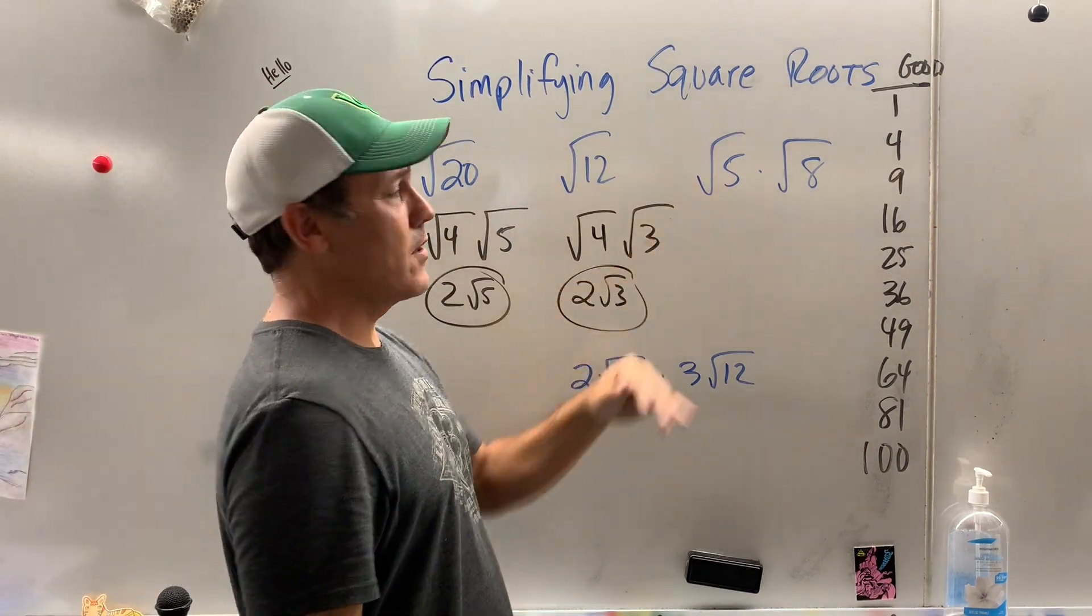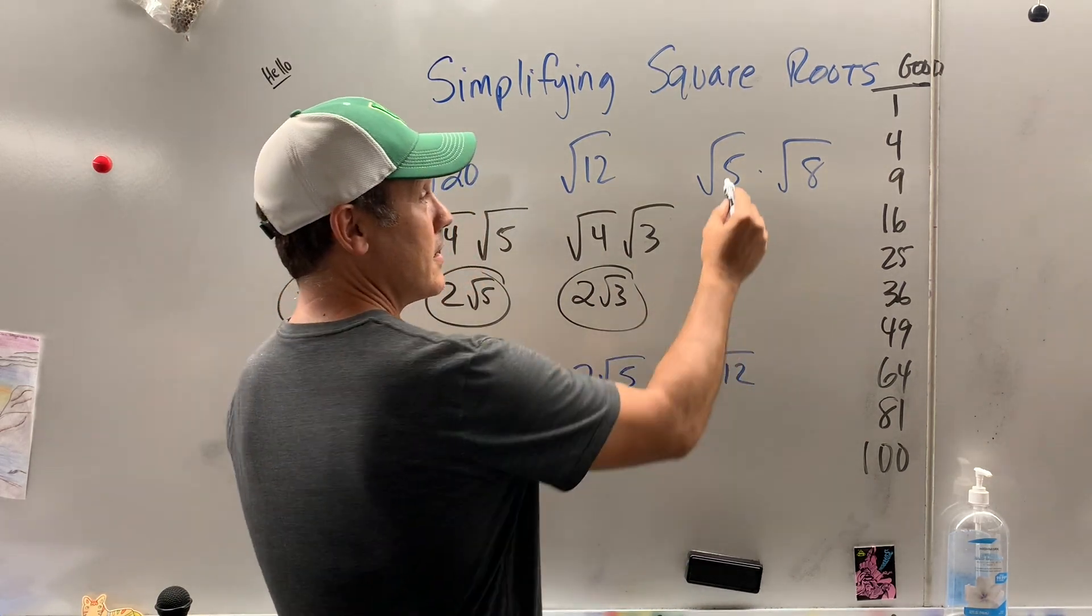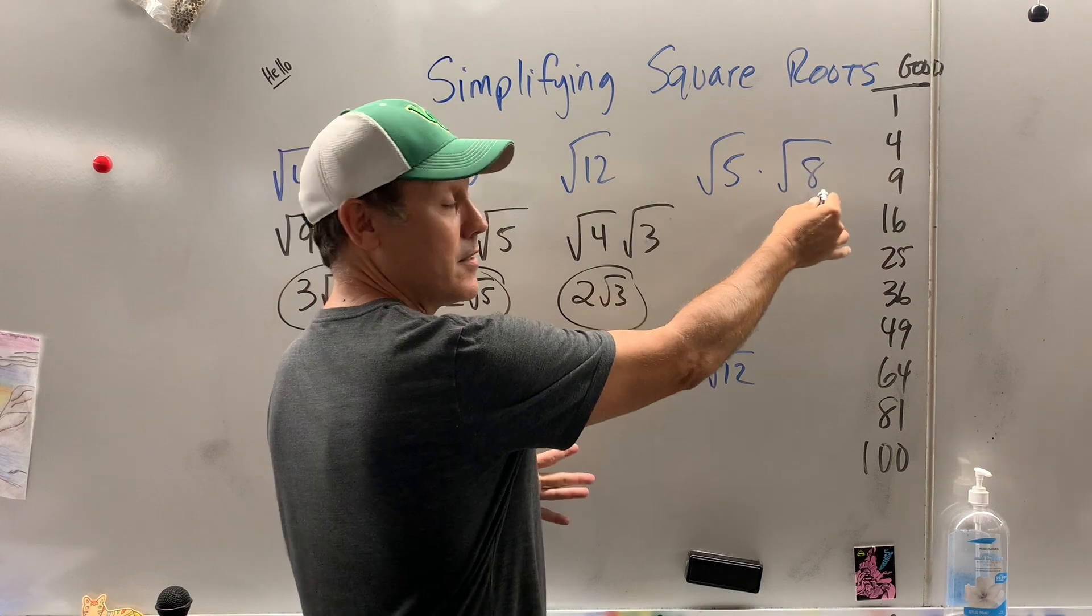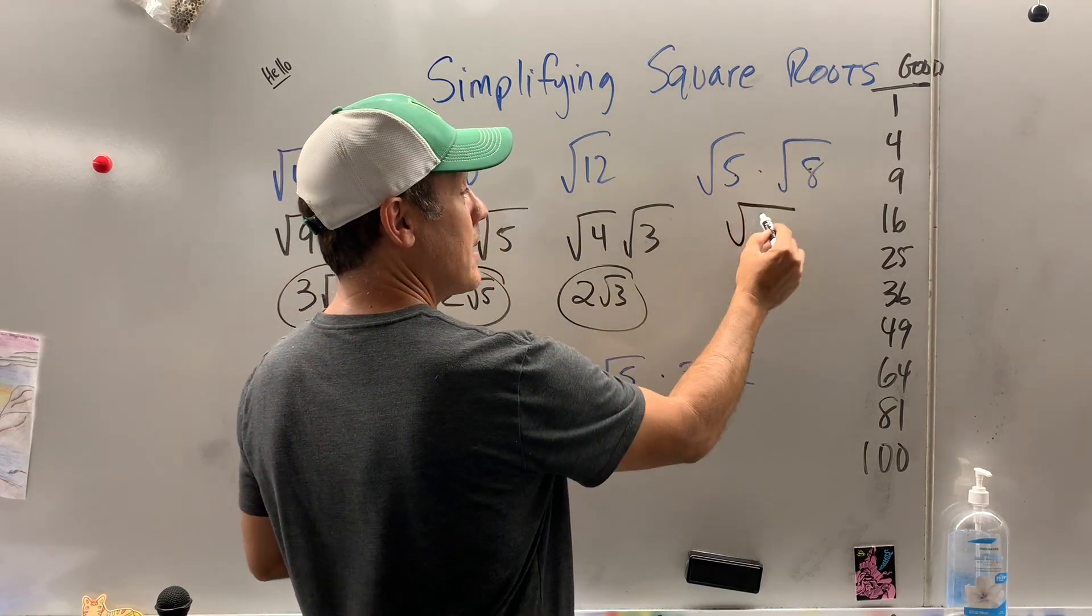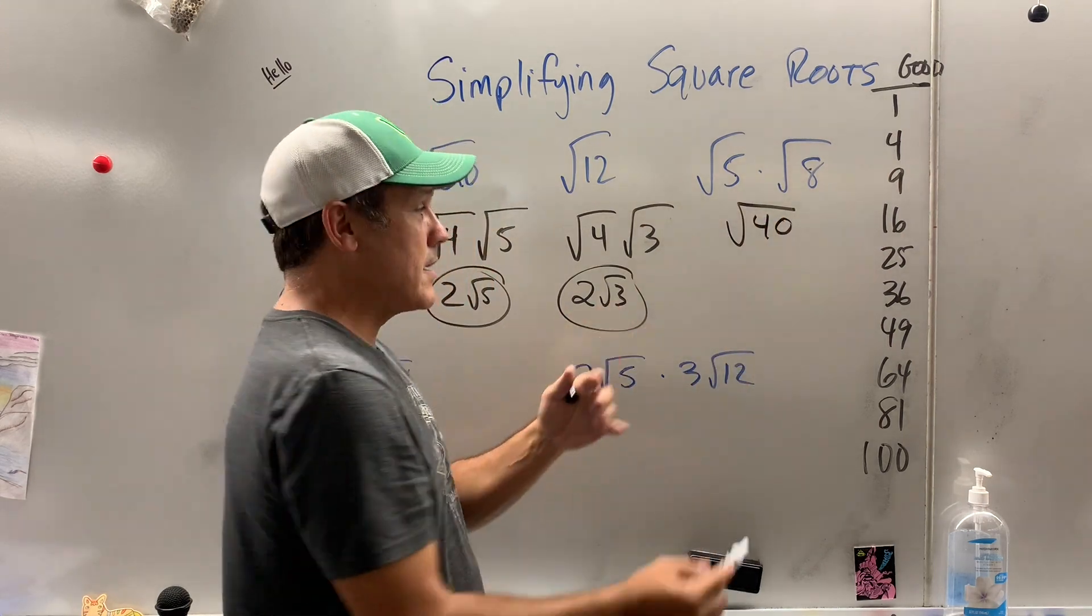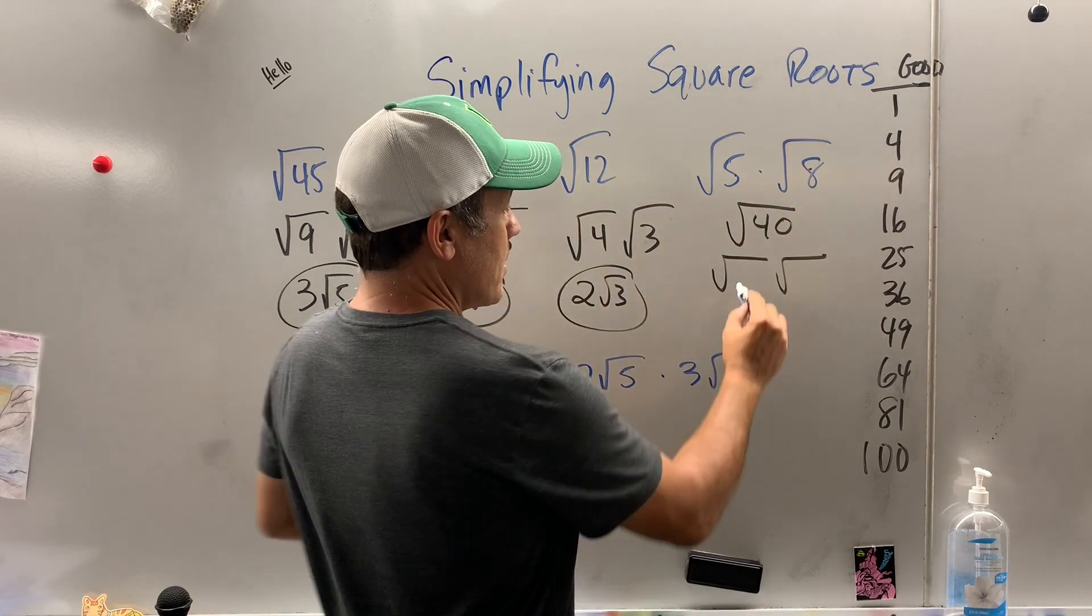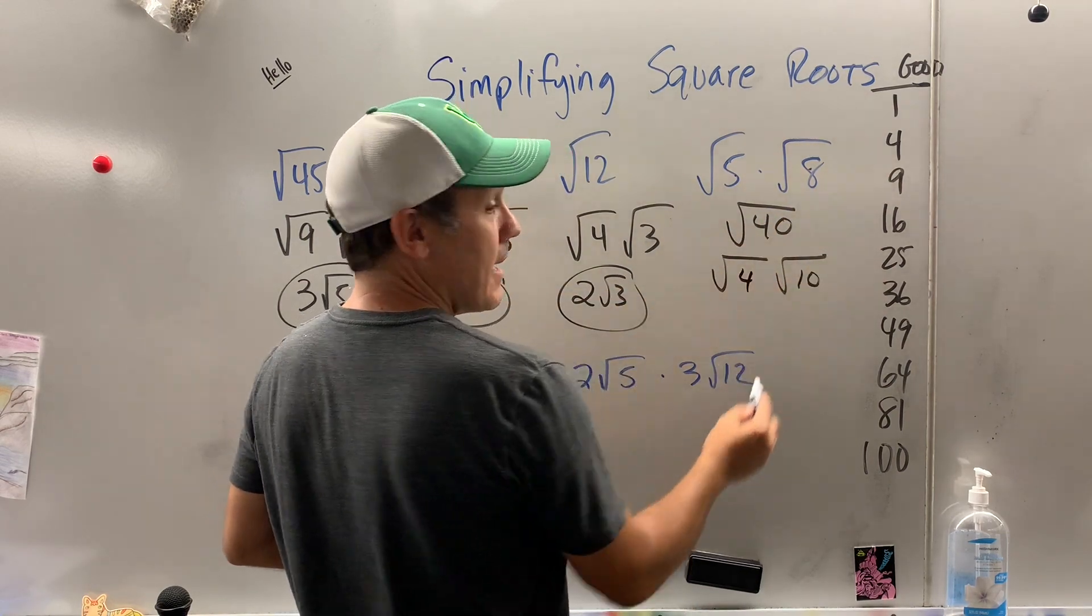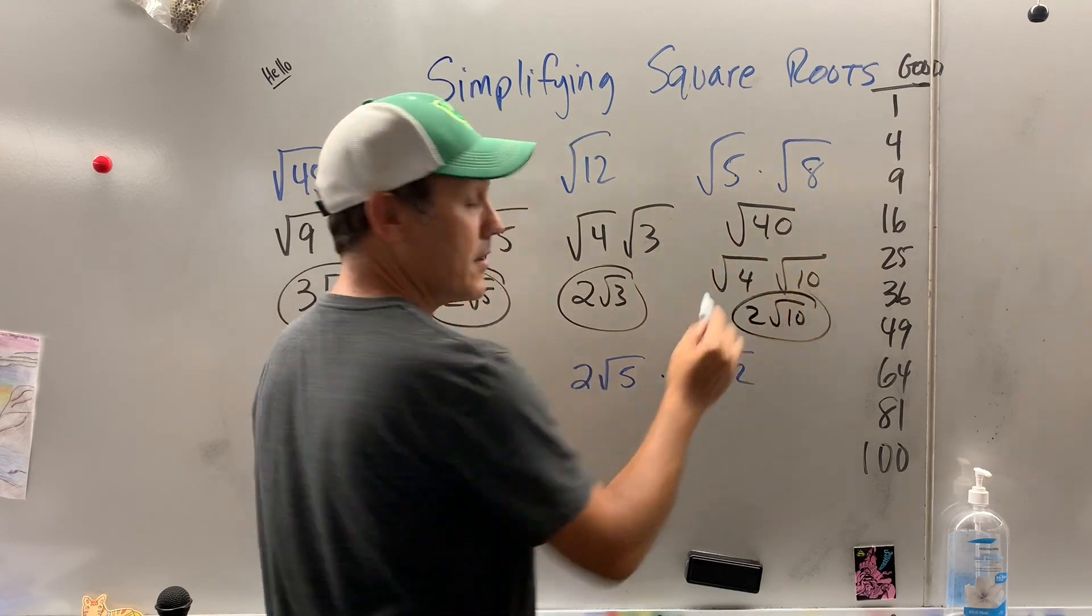Now here, I don't know if you know this or not, but you can multiply numbers inside radicals all day long. A number inside a radical times another number inside a radical and make one big radical. What is 5 times 8? 40. Now, we could break this baby down to the good and the bad. 4 goes in. 4 times 10 is 40. Square root of 4 is 2. Radical 10. There's my answer.